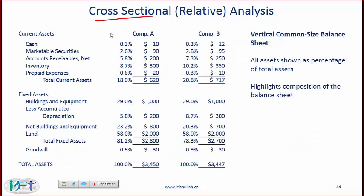Next we look at cross-sectional analysis. With cross-sectional analysis you are comparing companies at the same point in time. For example, comparing company A with company B — they may have the same amount of cash relative to total assets, but company B has a higher percentage of accounts receivable relative to total assets. With time series or trend analysis, we look at what's happening to a particular company over a period of time.